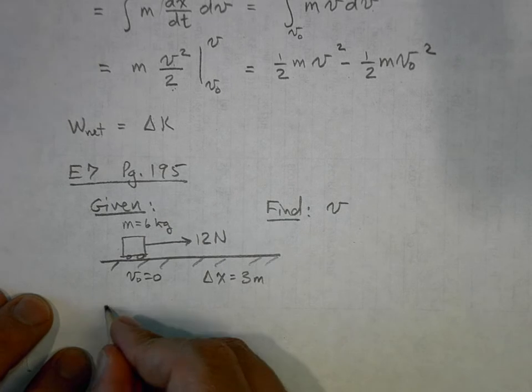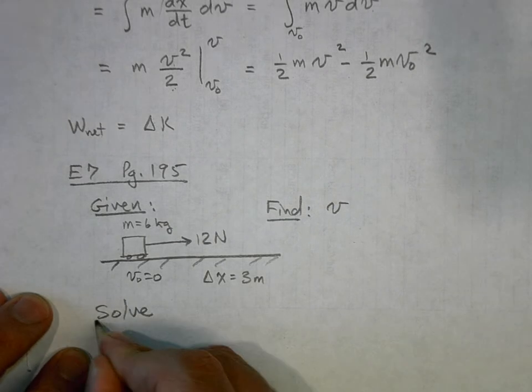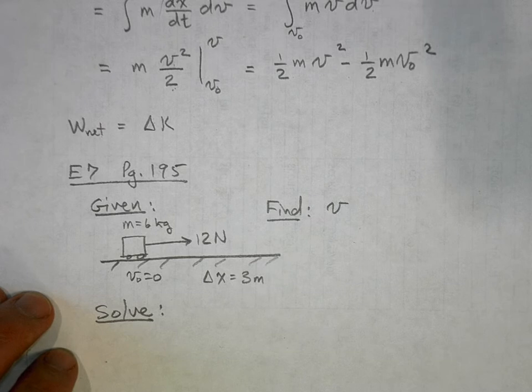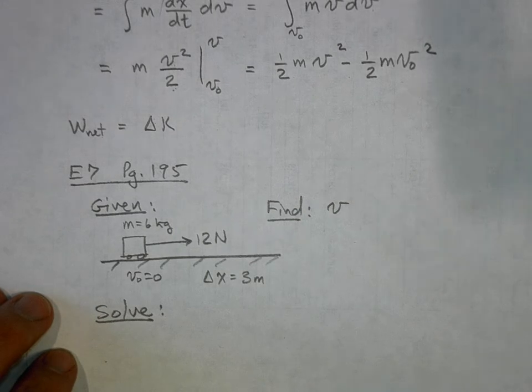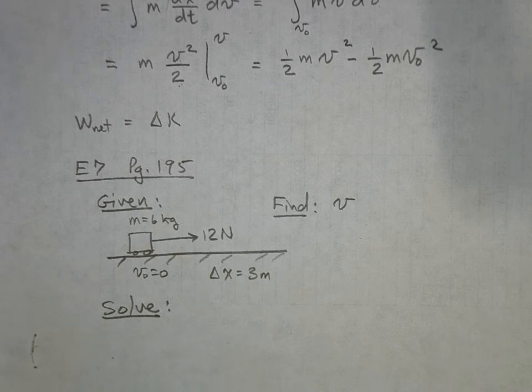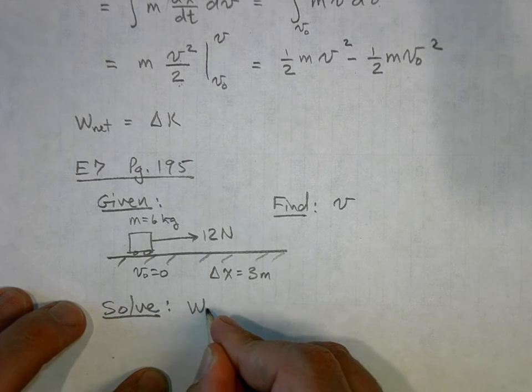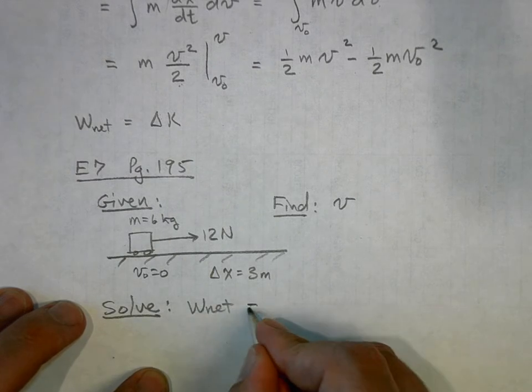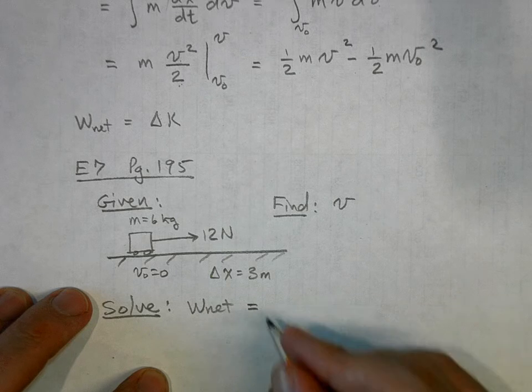and all they're asking for is a final velocity, then you can use the work energy theorem instead of Newton's laws and the stuff that we did in chapter 5. The work energy theorem just says this: the work done by the net force is equal to the